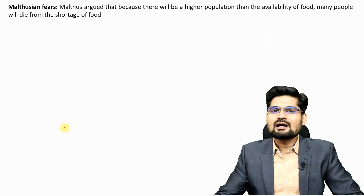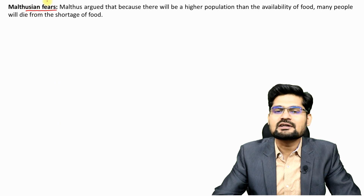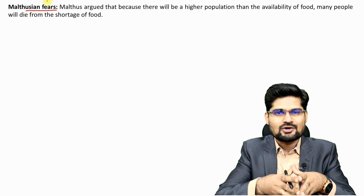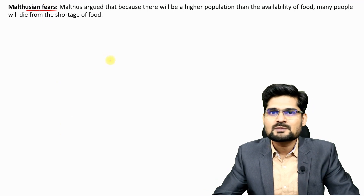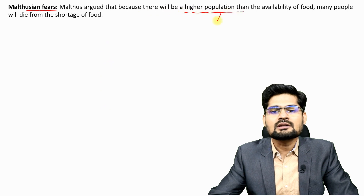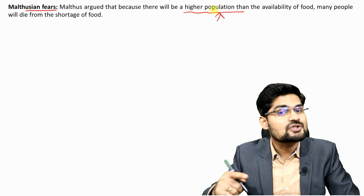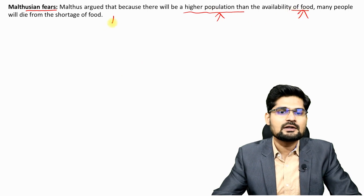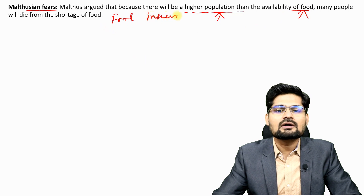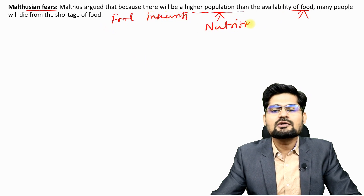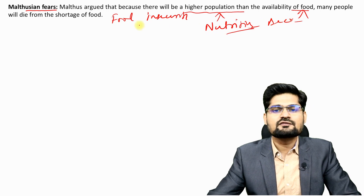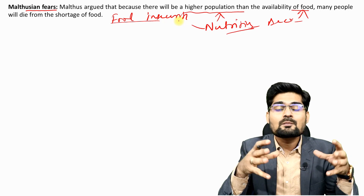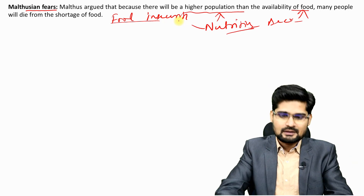The Malthusian fear — from the Malthusian population theory — is another challenge. If population continues exponential growth, food availability becomes a critical problem, leading to food insecurity and nutrition insecurity. Food and nutrition security are two major issues that will be a big challenge for overpopulated countries of the world.